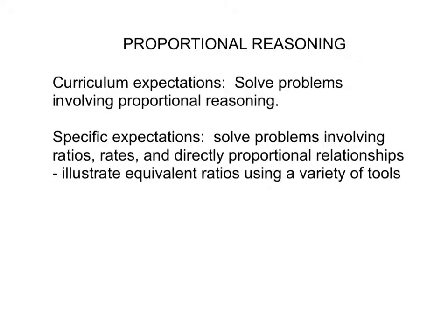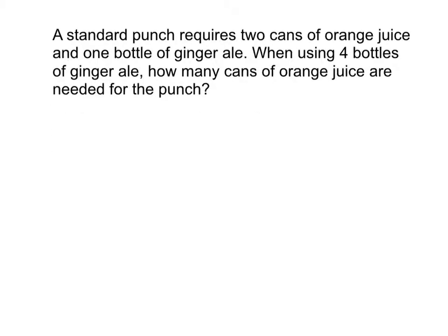Today we're going to solve a problem involving proportional reasoning. I'm going to show you one strategy of solving this problem. So let's look at the problem. The question says that a standard punch requires two cans of orange juice and one bottle of ginger ale. When using four bottles of ginger ale, how many cans of orange juice are needed for the punch?